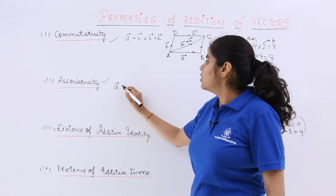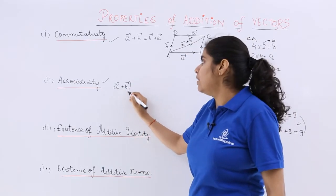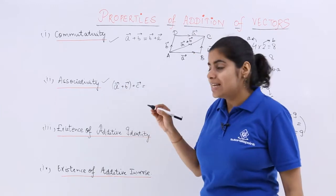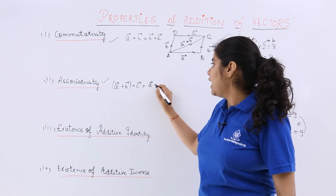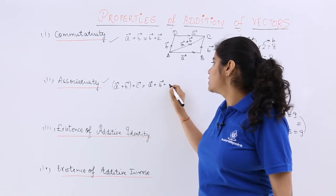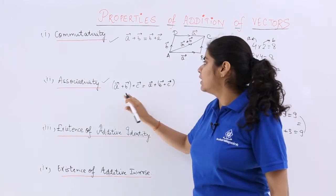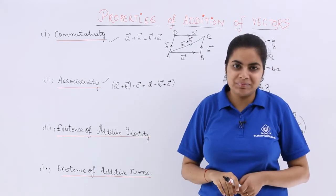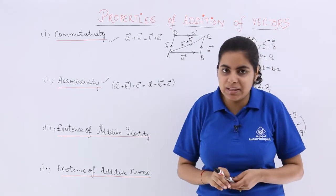When talking about associativity for vector addition, I know that in vector addition also this follows well. A plus B vector plus C vector addition is actually equal to A plus B plus C vector such that earlier you can take A and B addition, later you can take B and C addition. So associativity has been done.